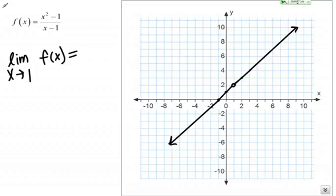But even though the function doesn't exist at X equals 1, we can still find the limit as X approaches 1. Jim showed you how to estimate that limit using a table, but let me just very briefly show you how to think about it graphically as well.